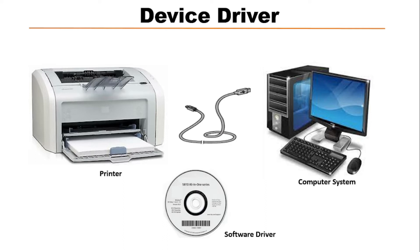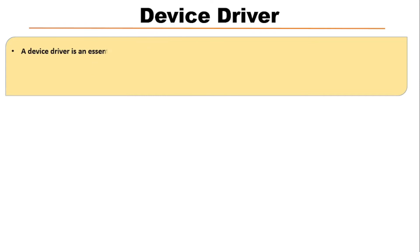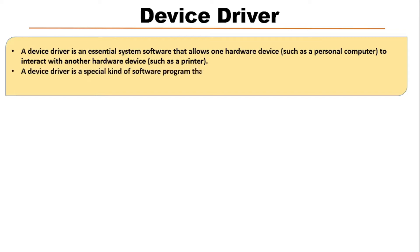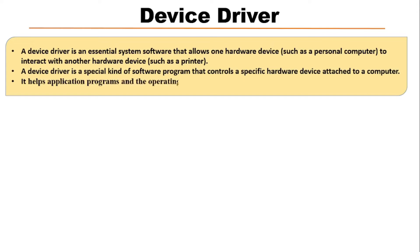Now we will know what a device driver is. A device driver is an essential system software that allows one hardware device such as a personal computer to interact with another hardware device such as a printer. It is a special kind of software program that controls a specific hardware device attached to a computer system, and mainly helps application programs and operating systems to do their tasks.